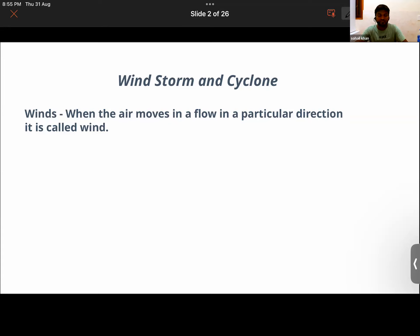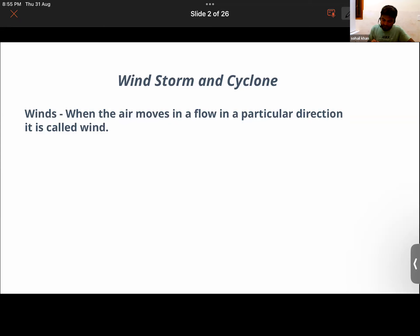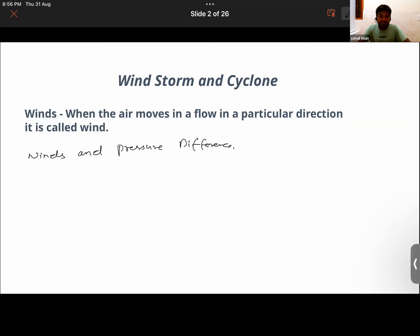Winds are caused by air currents, and air currents are caused due to pressure difference. Air will move from a high pressure area to a low pressure area. If the wind speed is increased, the air pressure is reduced.